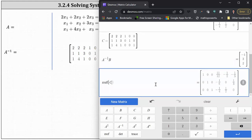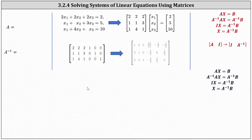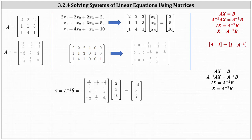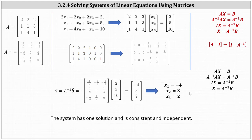So whether we find A inverse by hand or with technology, we know to find the solution we need to determine A inverse times vector B, which gives us the 3 by 1 matrix shown here on the right, once again indicating x1 equals negative 4, x2 equals 3, and x3 equals 2. Because we have one solution, the system is consistent and independent.